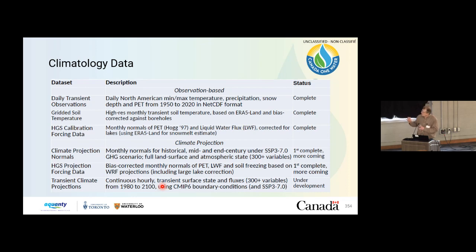All of these data sets have been assembled and vetted by people with deep expertise. They're being used and validated within the Canada One Water modeling framework, but they're all going to be pushed out for public consumption as well. This includes both the historic data extending from 1980 to 2020, but also the future climatology data extending through to the mid-century and end-of-century timeframes.